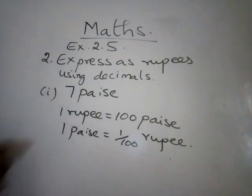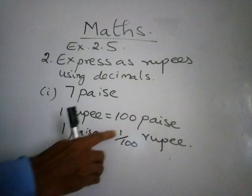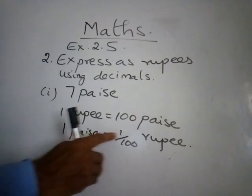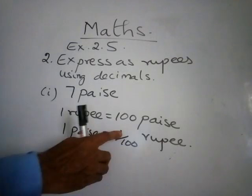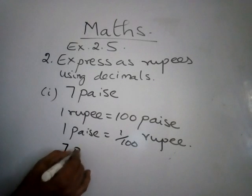Now the question is given as 7 paise. When 1 paise is 1 by 100th of the rupee, 2 paise will be 2 by 100, 3 paise will be 3 by 100th of the rupee, 4 paise will be 4 by 100th of the rupee. Whatever the number comes here, it will go there. We can easily now replace. 7 paise will be...